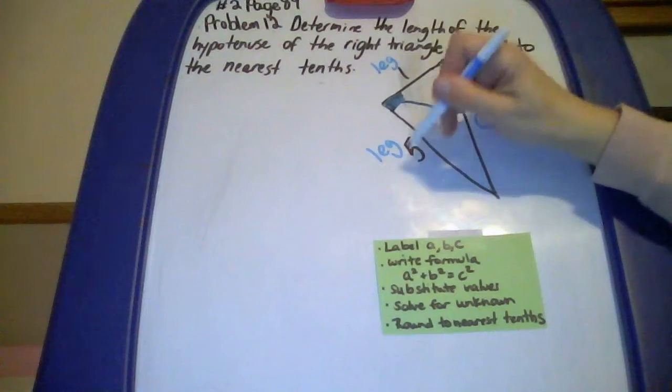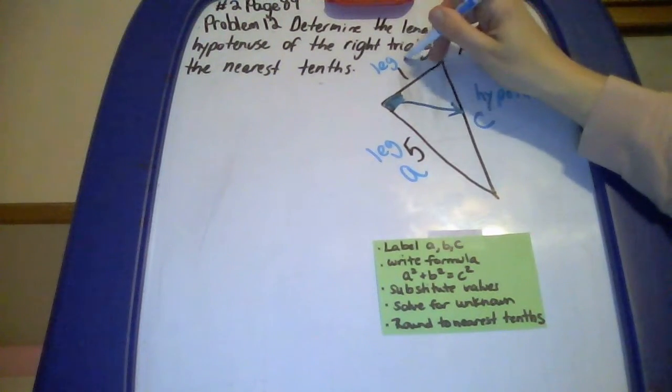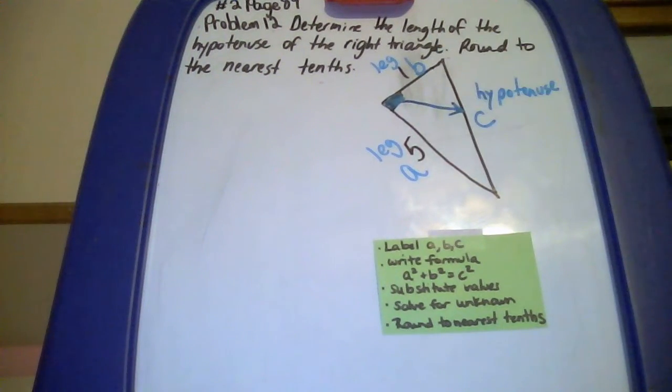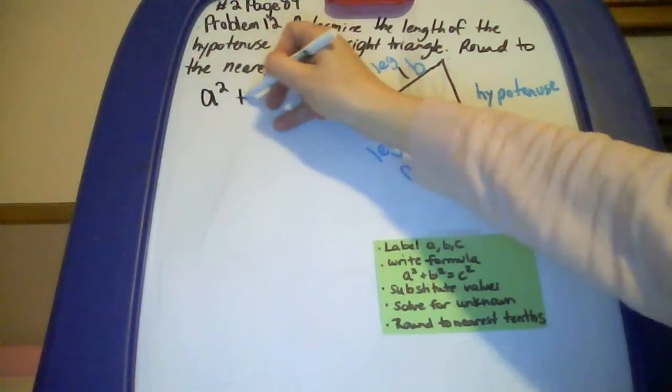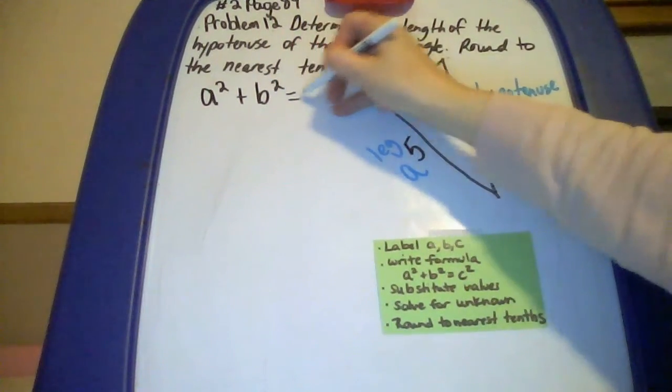Label one of them with an A, the other one with a B. It doesn't matter which you call A and which you call B. So then I'm going to write the formula for the Pythagorean theorem down. A squared plus B squared equals C squared.